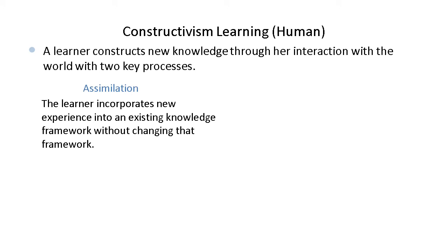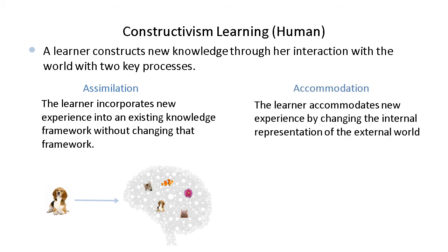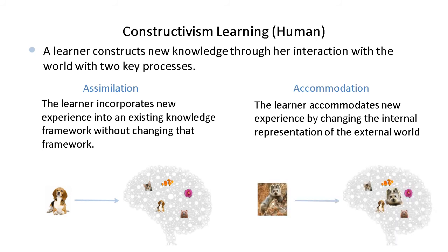Through assimilation, the learner incorporates new experience into an existing knowledge framework without changing that framework, as in scenario one. Through accommodation, the learner accommodates new experience by changing the internal representation of the external world, as in scenario two.